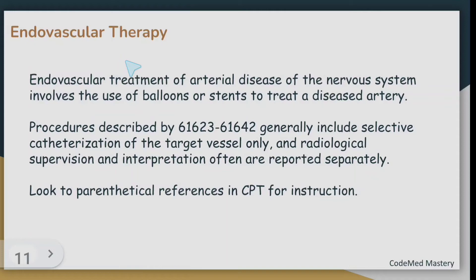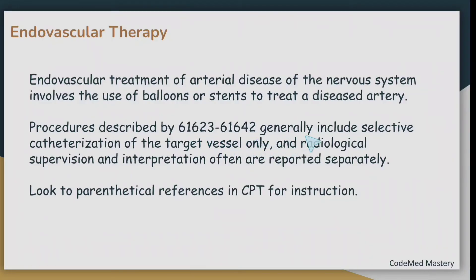Next is endovascular therapy. Endovascular treatment of arterial disease of the nervous system involves use of balloons or stents to treat a diseased artery. The procedures are described by codes 61623 to 61642 and generally includes selective catheterization of the target vessel only. Radiological supervision and interpretation must be reported separately, and we have to look at the parenthetical references in the CPT manual for instructions.